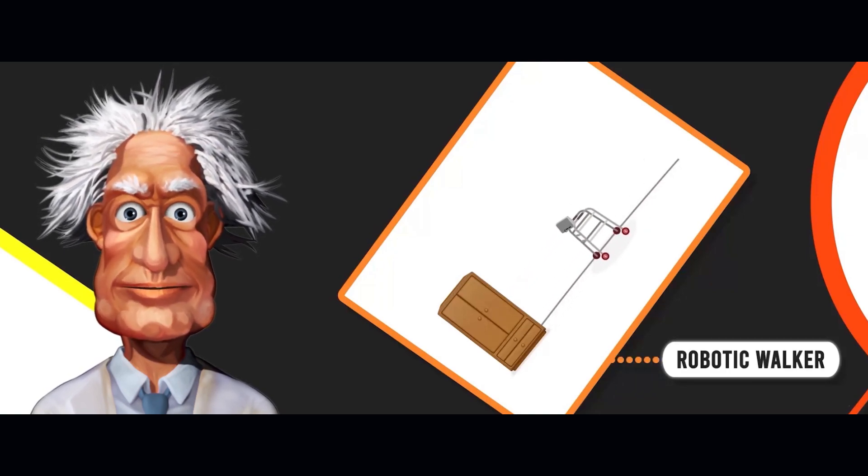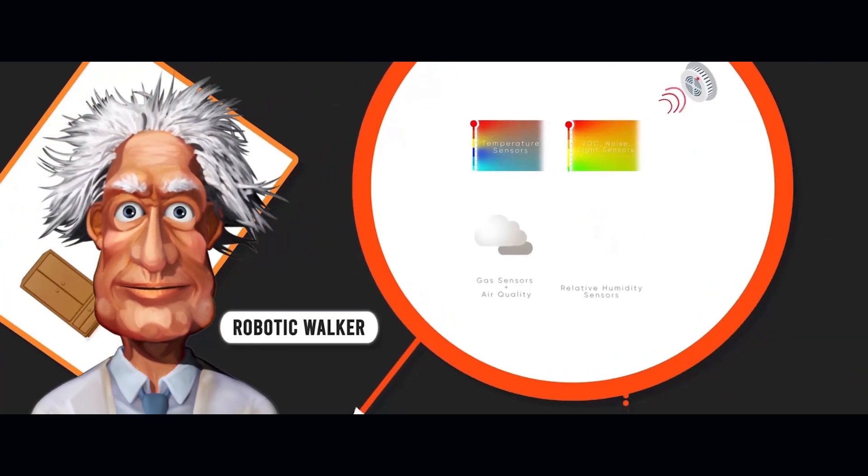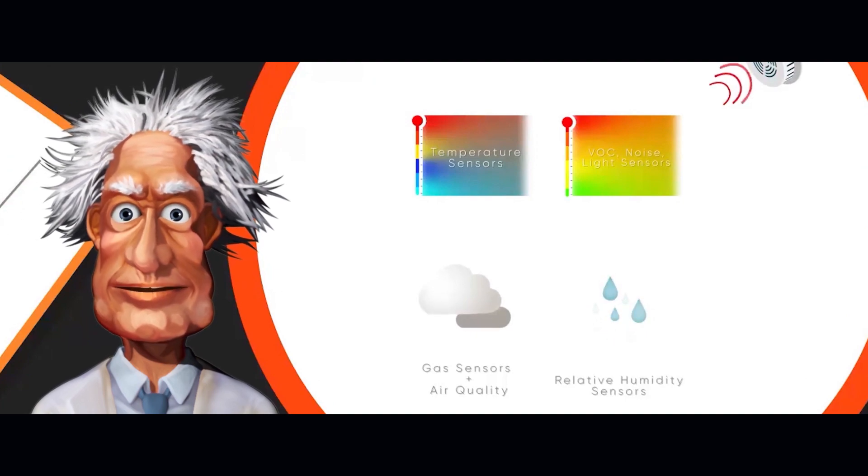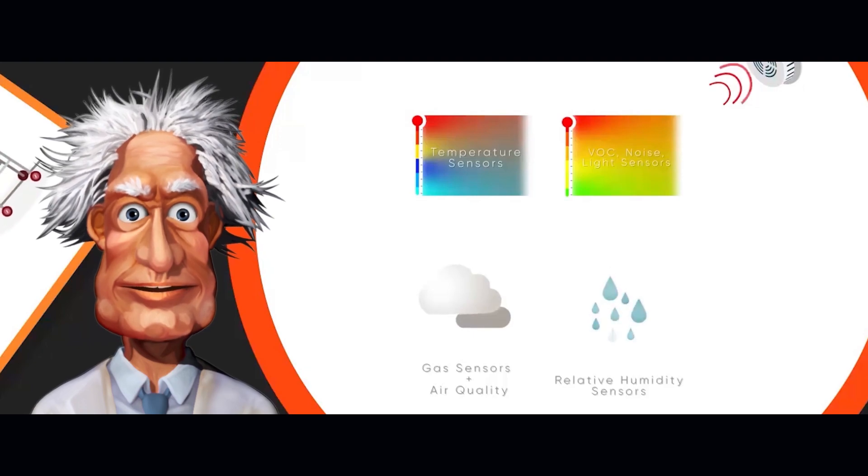But environmental monitoring also includes sensors for temperature, relative humidity, gas, air quality, organic substances in the air, noise, and lights.